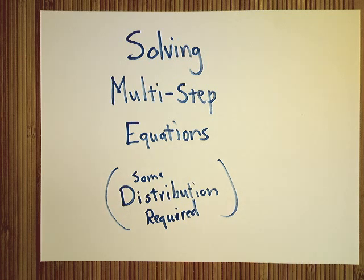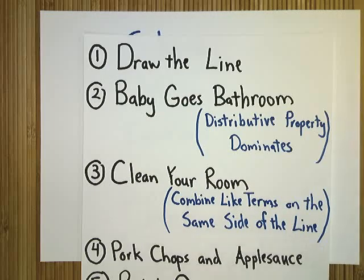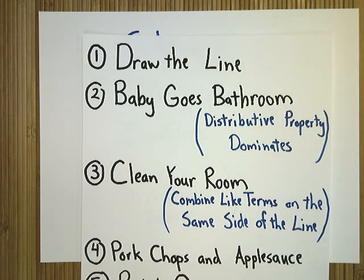Today we're going to talk about solving multi-step equations when you actually do have to use the distributive property. There are many cases where the distributive property exists in a problem and it's really an important idea that you know how to do the right thing. We're not going to change much from what we've been doing, still using the same system, draw the line, but this time we're doing Baby Goes Bathroom because distributive property does dominate.